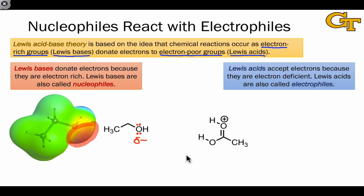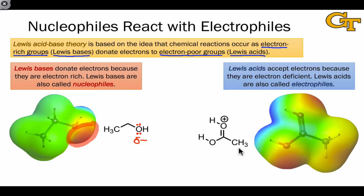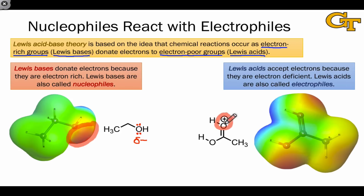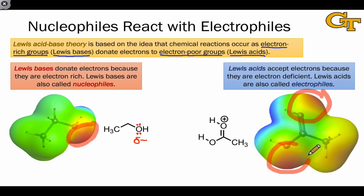Lewis acids, on the other hand, accept electrons because they're electron-deficient. In organic chemistry, we more often call Lewis acids electrophiles since they're attracted to electron-rich regions — they're electron-loving in that sense. The molecule shown here is protonated acetic acid — acetic acid with one additional proton, and for that reason it's positively charged. Here's an electrostatic potential map for protonated acetic acid. One important point is that formal charges can be misleading. Notice that even though the oxygen is formally positively charged — and in fact this other oxygen is formally positively charged in an alternative resonance form — in the electrostatic potential map, the oxygens are clearly electron-rich, at least relative to everything else within the molecule. The formal charge is misleading in that sense.